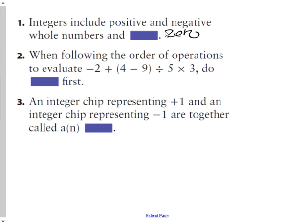Question two: when following the order of operations, or BEDMAS, to evaluate negative 2 plus bracket 4 minus 9 divided by 5 times 3, the first thing you would do according to that, since BEDMAS is an acronym helping us figure out what to do first, we would do any brackets, and inside those brackets there is something to accomplish. We have to subtract 9 from 4, so brackets would be the first thing that we would do.